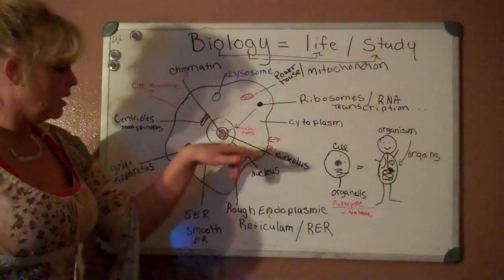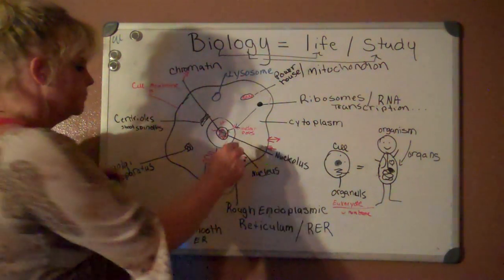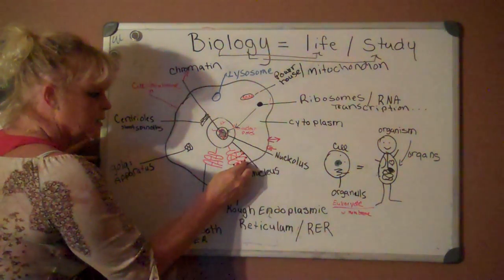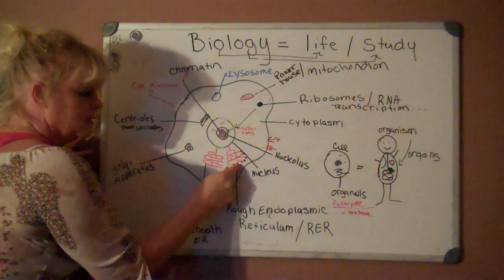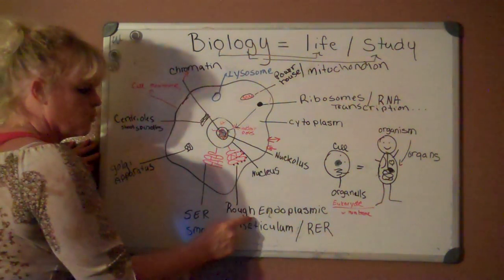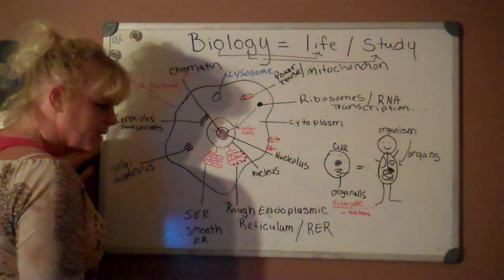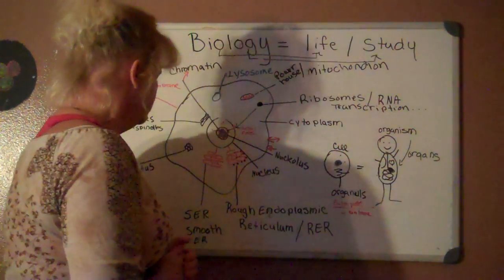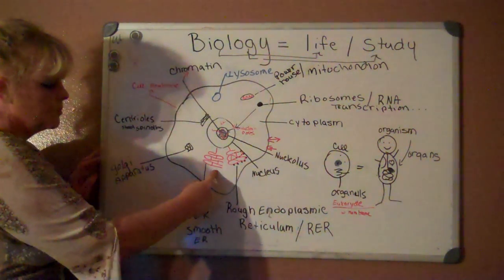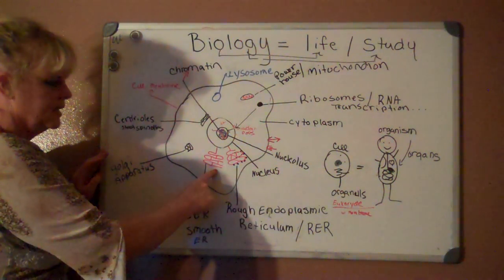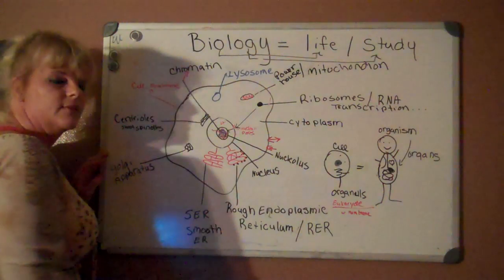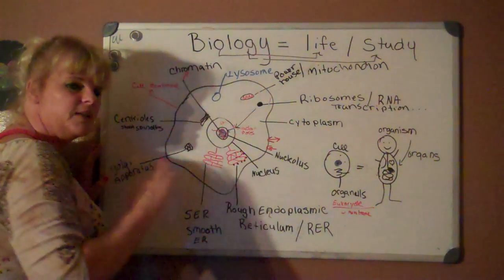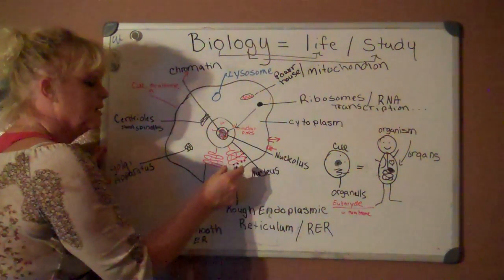Here you can see this squiggly structure — it has layers of material with little round circles on it, which are the ribosomes. This is referred to as the rough endoplasmic reticulum, or rough ER for short. There is also the smooth ER. A lot of people like to think of this as a train station — it's where your ribosomes are going to be working, and I'll explain the details later.